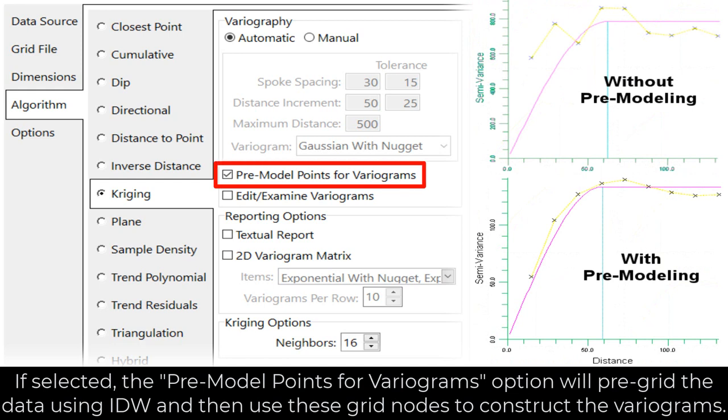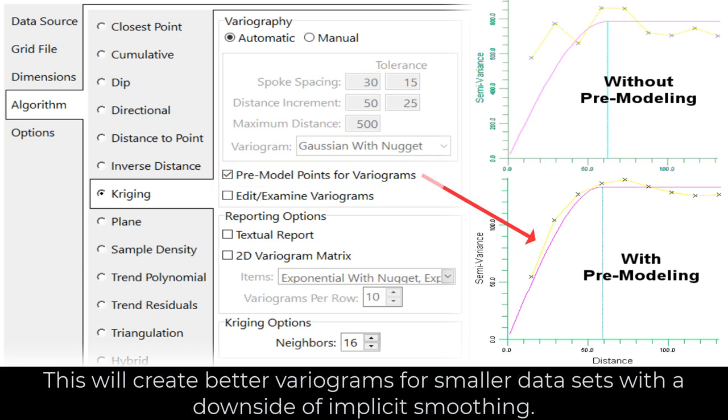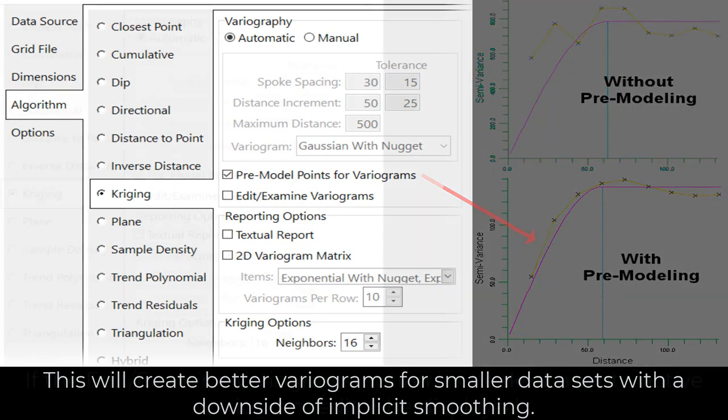If selected, the pre-model points for variograms option will pre-grid the data using IDW and then use these grid nodes to construct the variograms. This will create better variograms for smaller data sets with a downside of implicit smoothing.